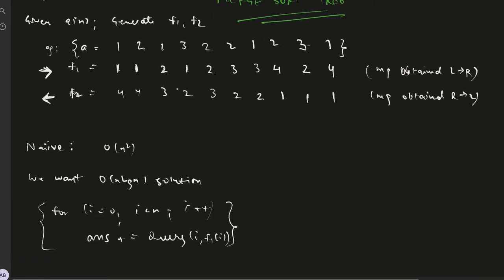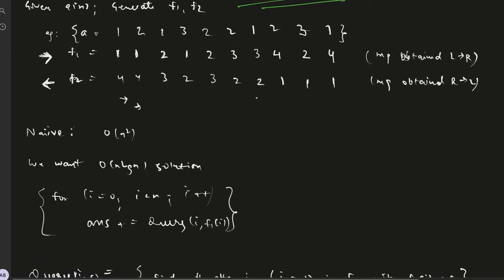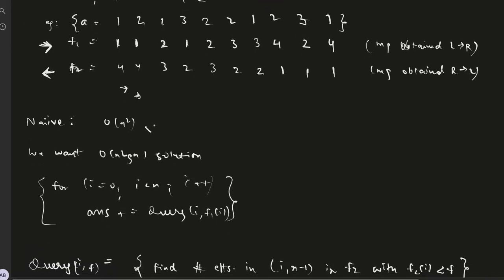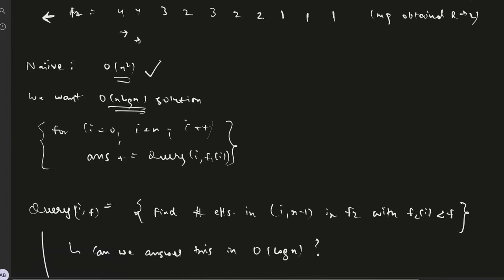Once we get f1 and f2, the naive solution could be for i equals 0 to n and for j equals i plus 1 to n, manually check which all pairs of i,j satisfy the condition given in the question and report the answer. That is the order of n square solution. What we want is the order of n log n solution.